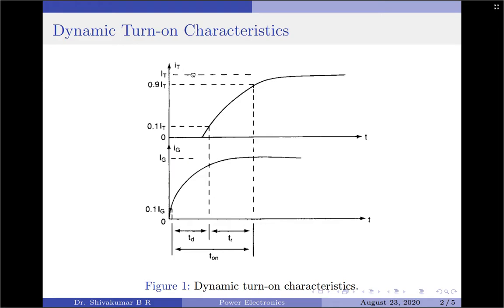The rise time, represented by TR, is the time required for the anode current to rise from 10% of on-state current (0.1 IT) to 90% of on-state current (0.9 IT). The complete turn-on time t_on is defined as the time interval between 0.1 IG and 0.9 IT. In general, the overall turn-on time t_on is the sum of the delay time TD and the rise time TR. This is the dynamic turn-on characteristic of the thyristor.